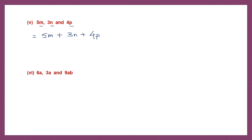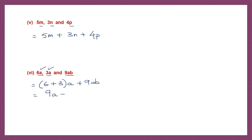Question 6: 6A, 3A, and 9AB. So 6A and 3A are like terms. Let's add those two together — numbers alone: 6 plus 3A, plus 9AB. 6 plus 3 is 9, so we get 9A plus 9AB. I cannot add these two together because they are unlike terms.